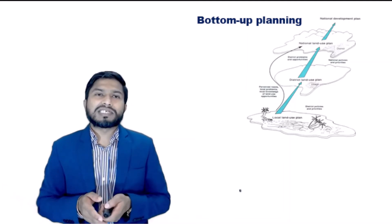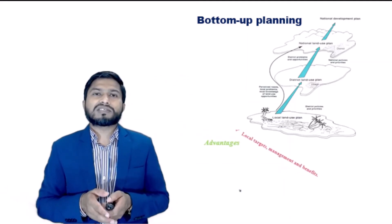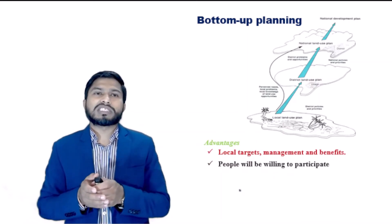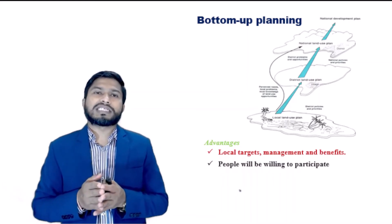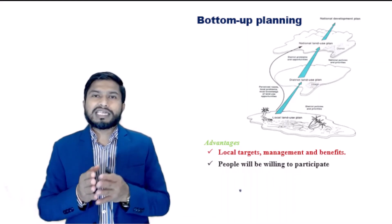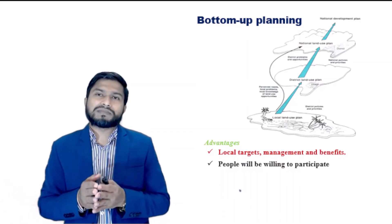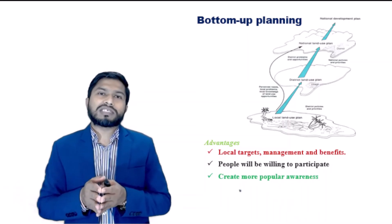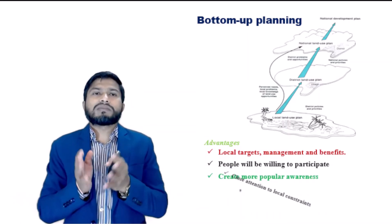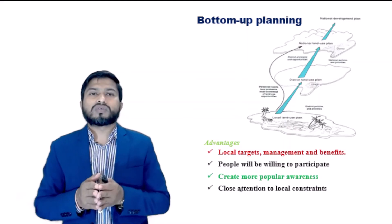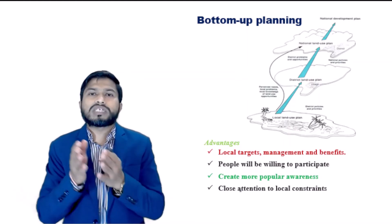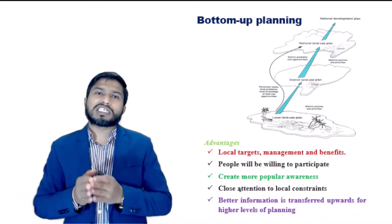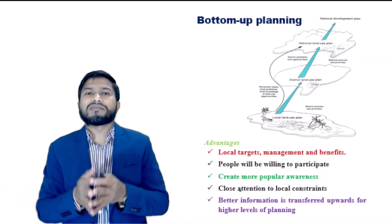There are several advantages of local land use planning. It represents local targets, local management and local benefits. People will be more motivated about a plan seen as their own, and they will be more willing to participate in its implementation and monitoring. It will create more popular awareness of land use problems and opportunities. Local level plans can pay close attention to local constraints, whether these are related to natural resources or socio-economic problems. This way, better information is transferred upward for higher levels of planning.